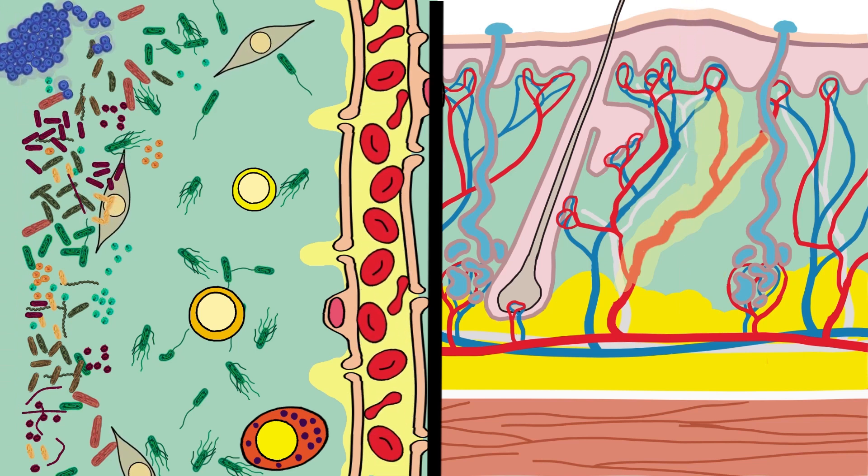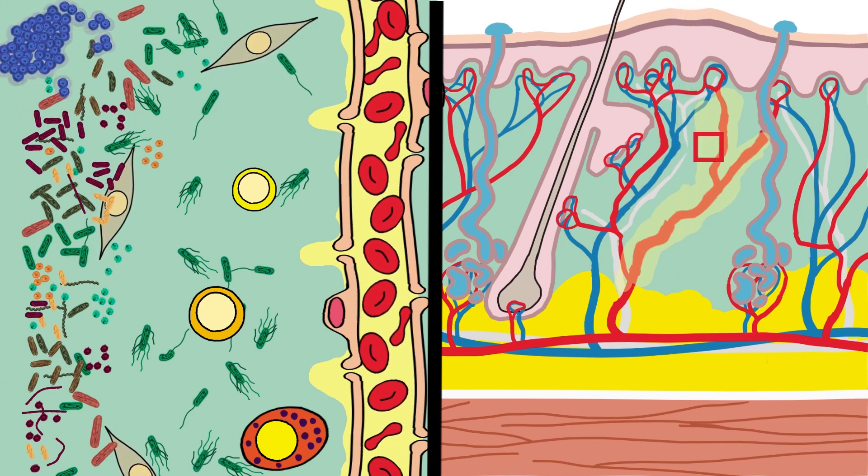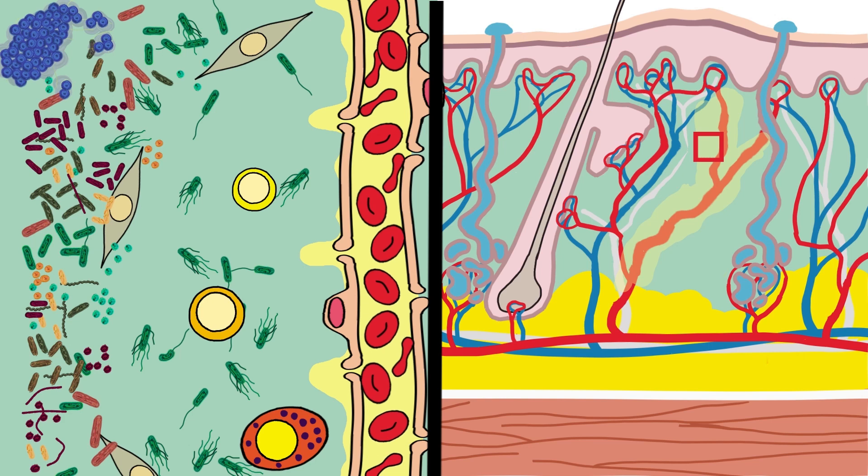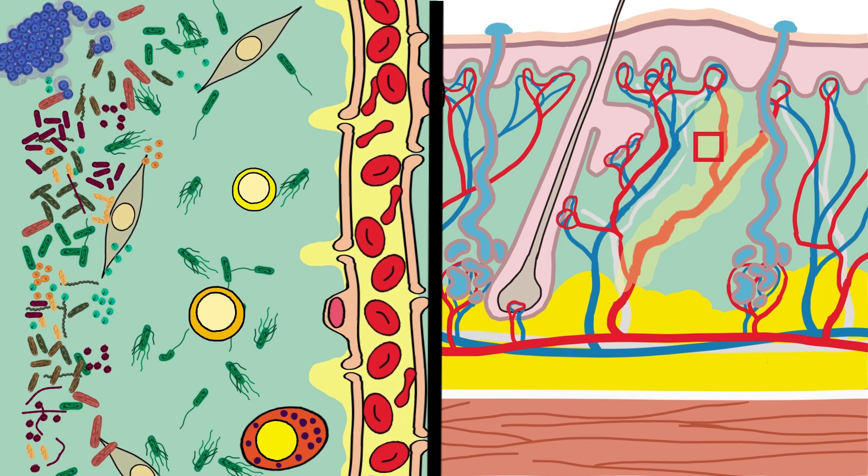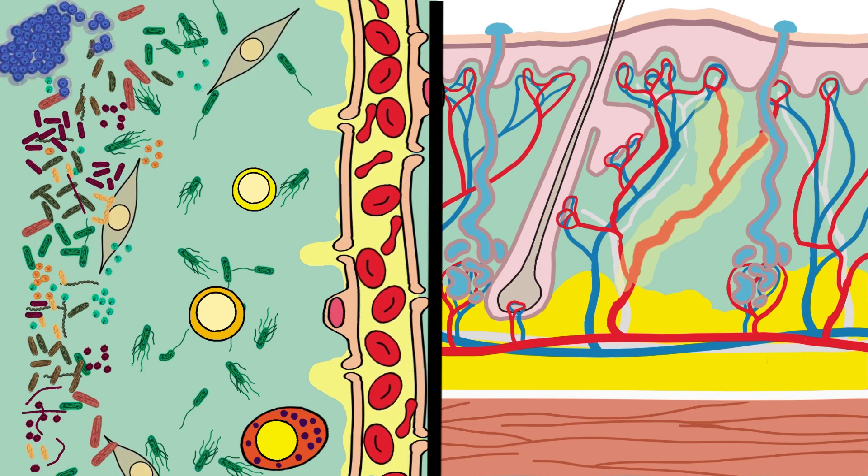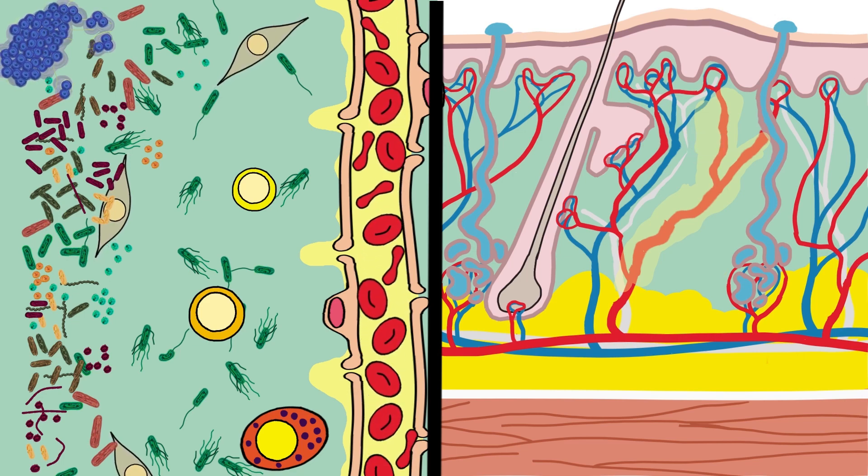but Staphylococcus aureus manages to stay inside the body and quickly begins to form a small colony in the dermis. The complement system wasn't enough to stop them. A stronger attack is needed to eliminate them.